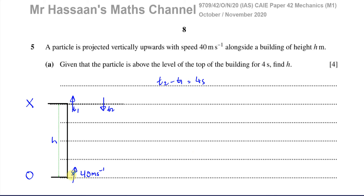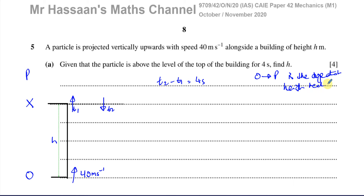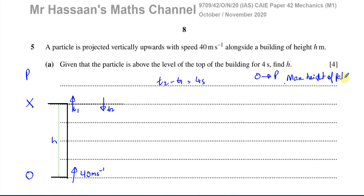With that information, we have to find the value of the height of the building. There are a couple of different ways we could go about doing this. One of the ways, which is probably the simplest, would be to work out the highest point it reaches. Let's call that the highest point P. So we can say O to P is the maximum height of the particle.